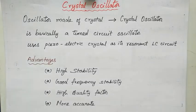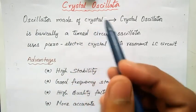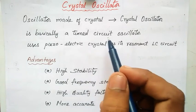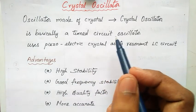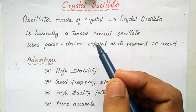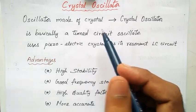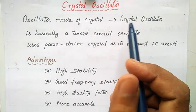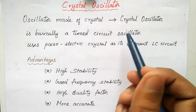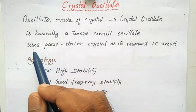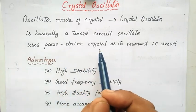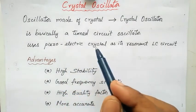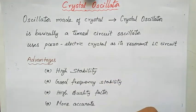The crystal oscillator is made of crystal — an oscillator which is made of crystal is called a crystal oscillator. It is basically a tuned LC circuit. The same principle we studied earlier in LC oscillators is going to work here, because the crystal is going to act as an inductor at the resonant frequency. It uses a piezoelectric crystal as its resonant LC circuit.